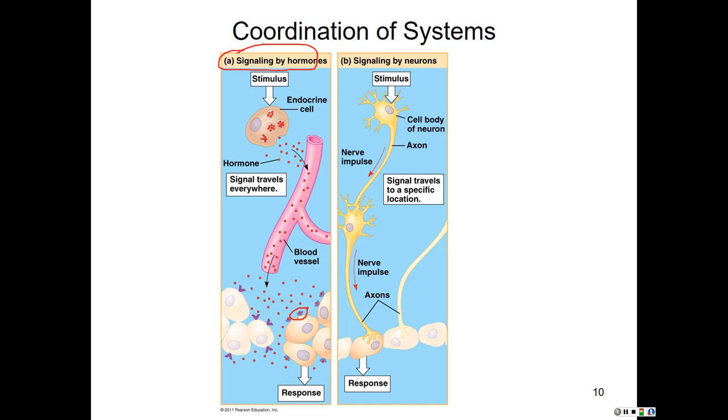By contrast, in the nervous system, cells are transmitting nerve impulses to very specific locations. We get some kind of stimulus that is transmitted as a nerve impulse to a very specific location.